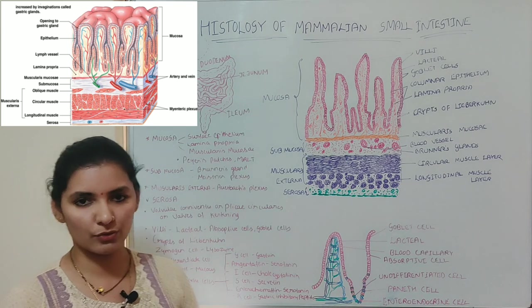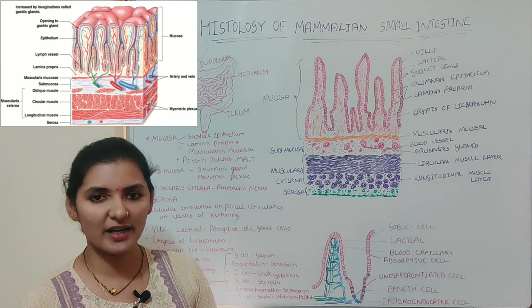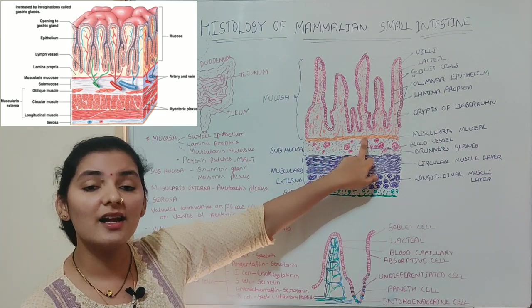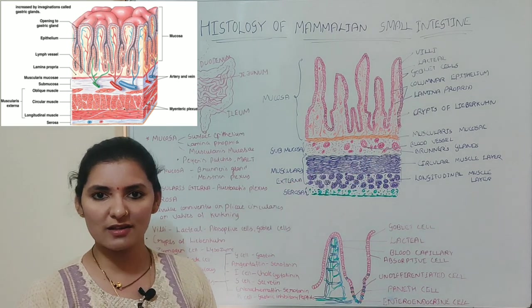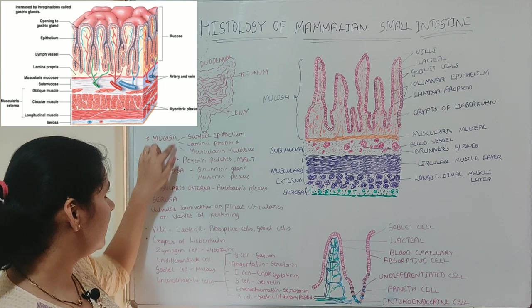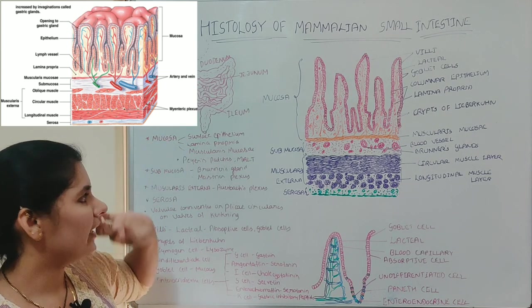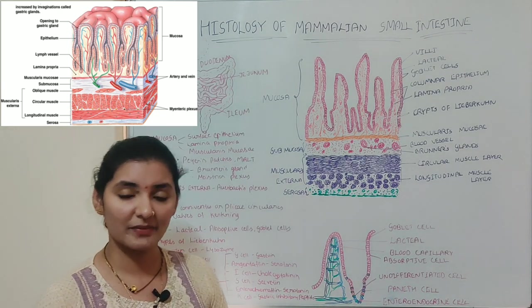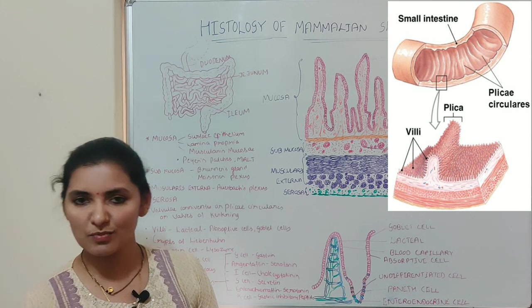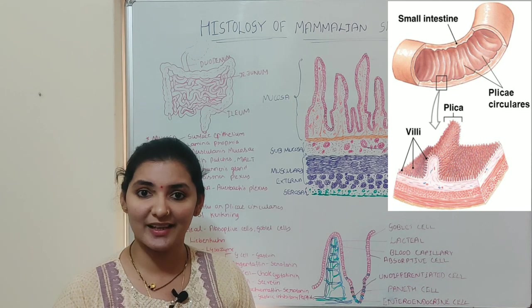The third component is muscularis mucosa. Muscularis mucosa is made up of muscle fibers arranged in two layers: inner circular muscle fibers and outer longitudinal muscle layer. That covers the three layers of mucosa. As already mentioned, the entire inner surface of the mucosa of the small intestine consists of small finger-like projections known as villi.